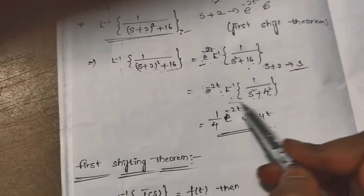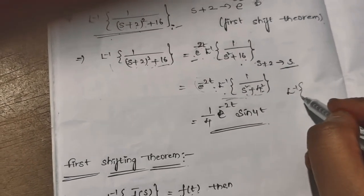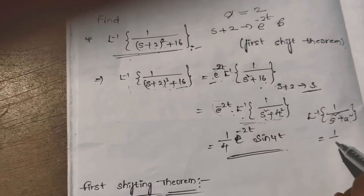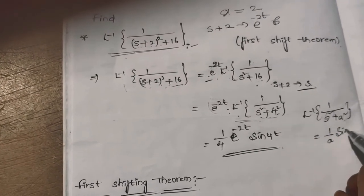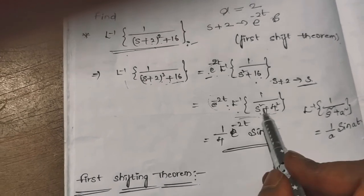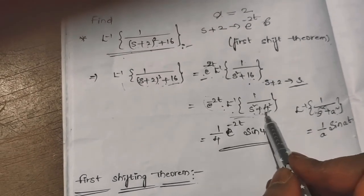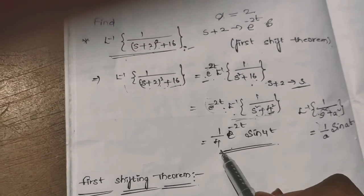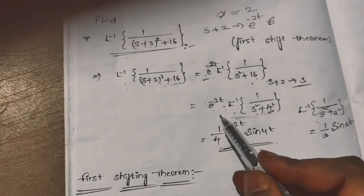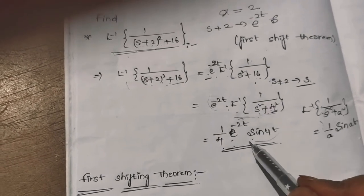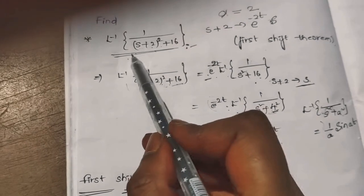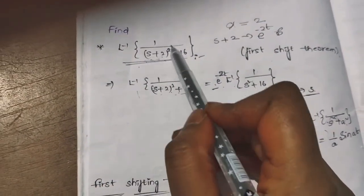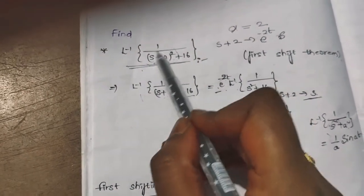E^(-2t) into L-inverse of 1 by s² plus 16, which can be written as s² plus 4². It is in the form of L-inverse of 1 by s² plus a², which equals the formula 1/a into sin(at). Here A is equal to 4, so applying the formula: 1/4 into e^(-2t) into sin(4t). According to the first shifting theorem, s plus 2 changes to e^(-2t).